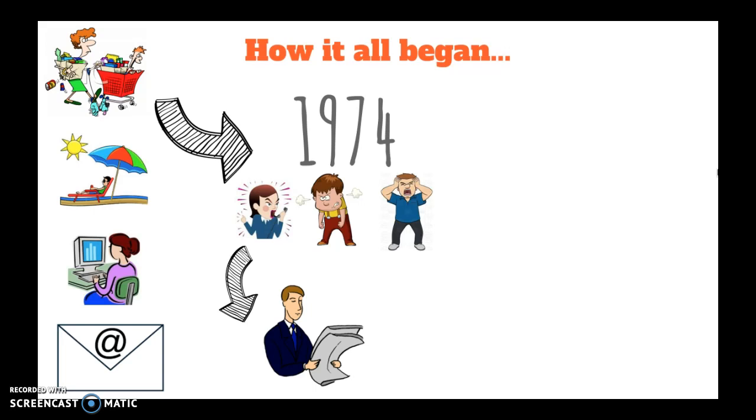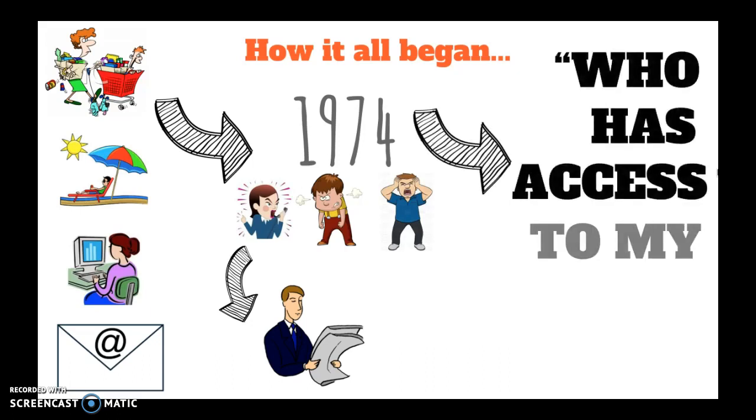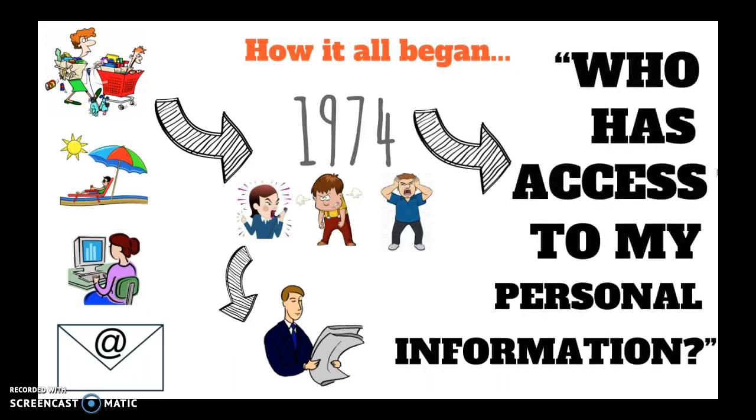During that time, schools had the authority to deny parents access to their child's school records, while allowing many third parties, such as governmental agents, access to their records. So the big question in 1974 was, who has access to my personal information?